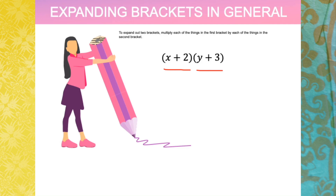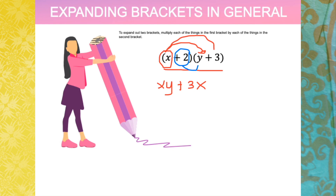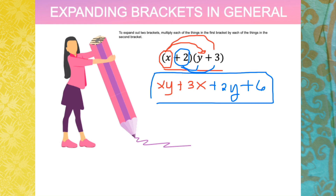We have to multiply each of the things here, so we will start with x and distribute it to the other bracket. x times y will be xy; x times positive 3 will be plus 3x. Then we proceed with the next item: plus 2 multiplied by y is plus 2y, and 2 times 3 is plus 6. When we simplify, we check if there is anything in common — since there is none, this is our final answer.